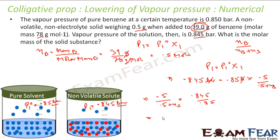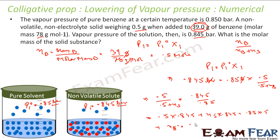Solving this: 0.5 × 0.845 plus ns × 0.845 equals 0.85 × 0.5. So moles of solute ns equals (0.85 − 0.845) × 0.5, divided by 0.845.